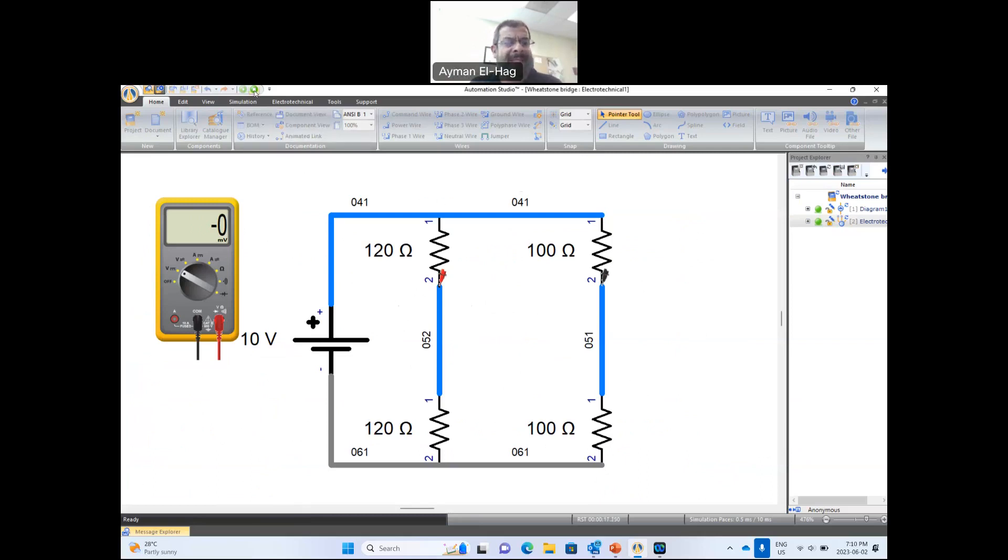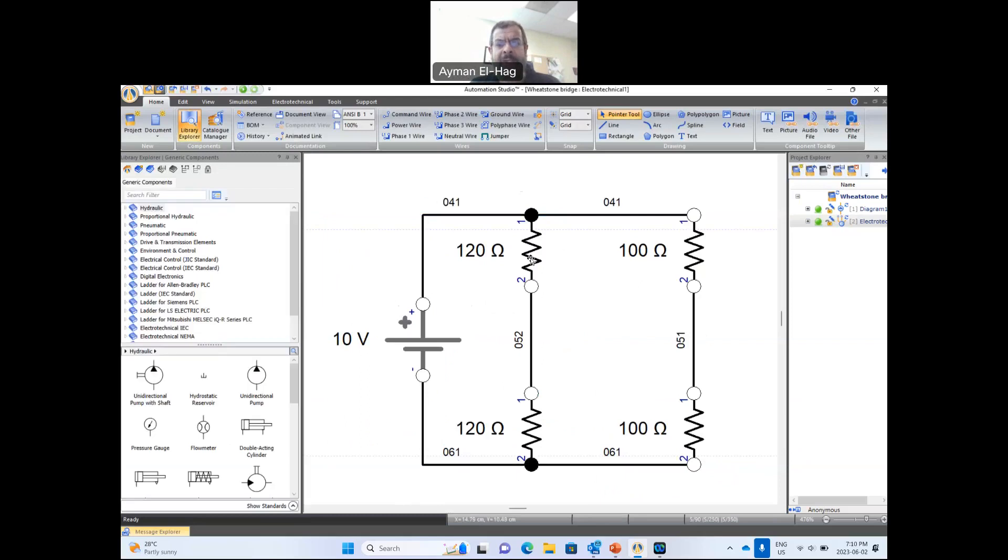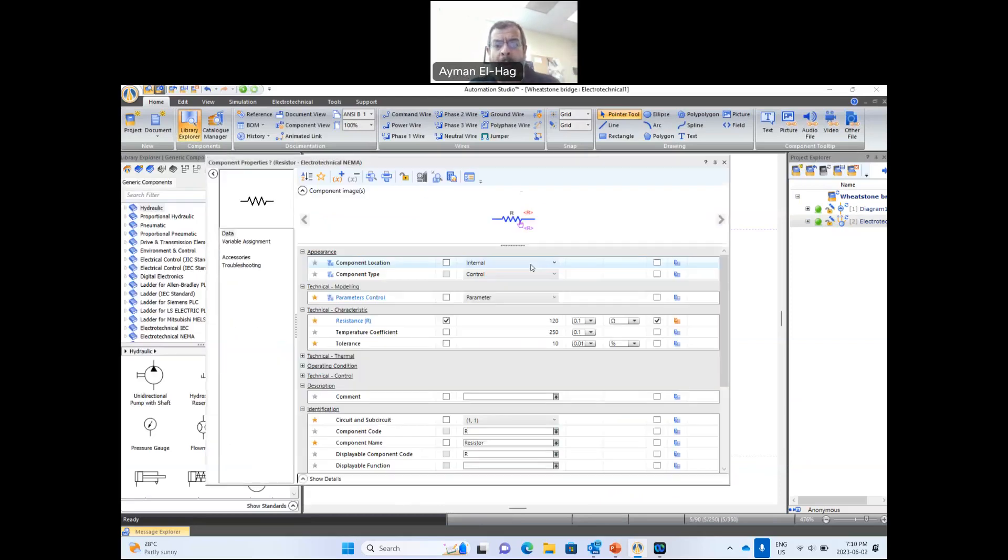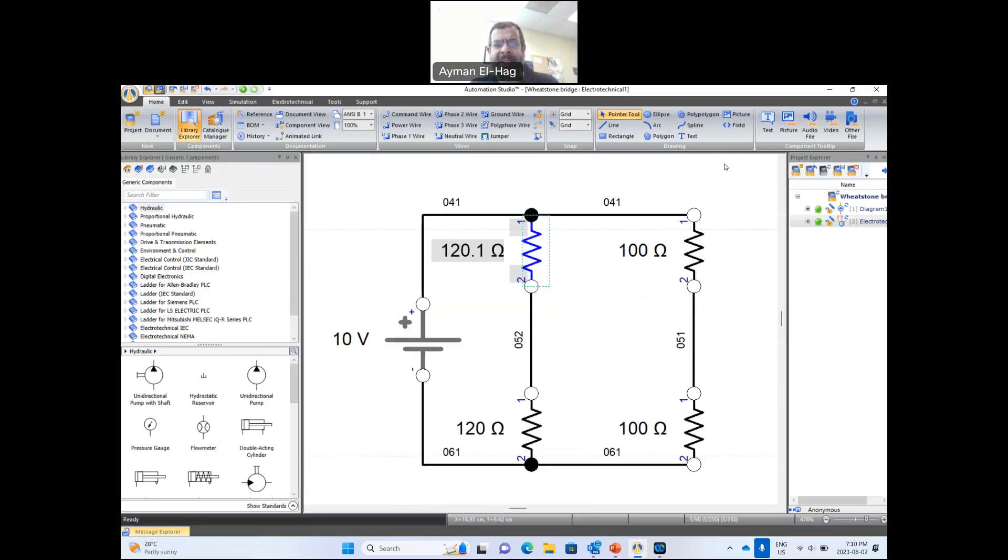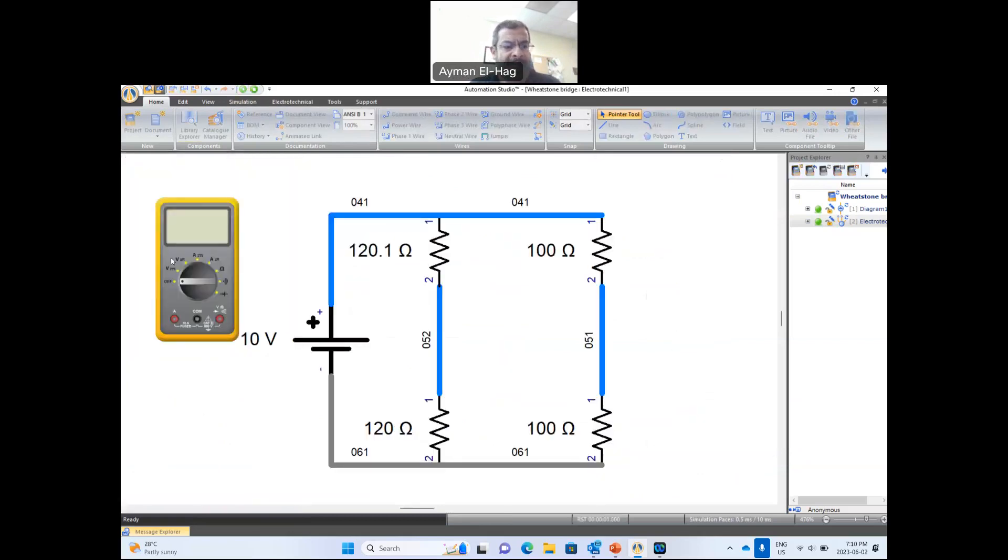Now, I will do a very little change here, and I will change what was R1, which is 120 ohm. I will just increase it, instead of 120 to 120.1. So a very little increase in the resistance. And let me run the simulation, and let me do the measurement now. Measure the voltage between the same two points.